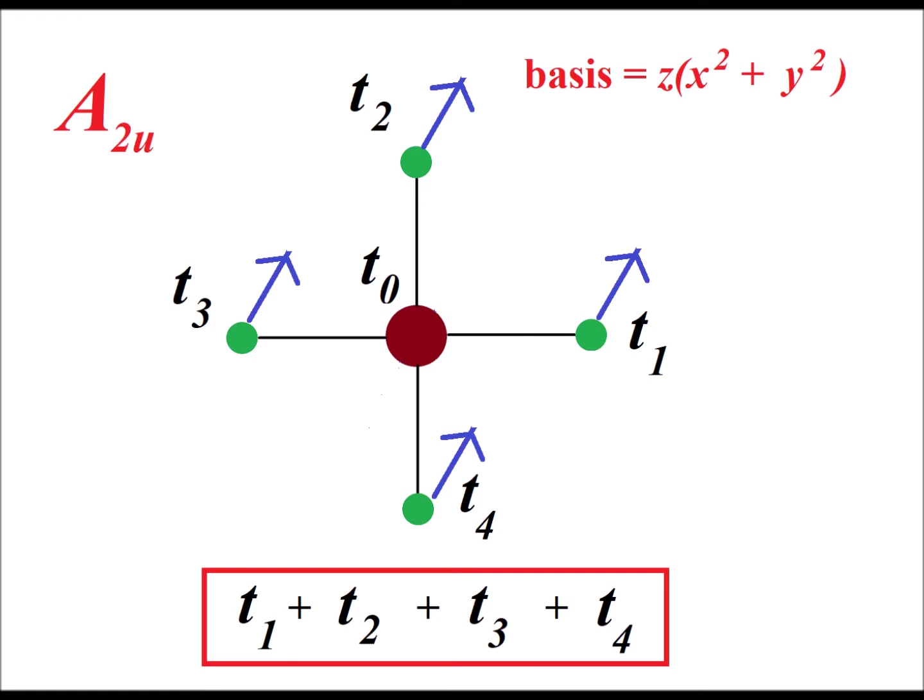The way to interpret a positive coefficient plus 1 is we have a movement in the positive z direction. So we notice that t1 through t4 are all increasing, while the central atom t0 stays in place. And this is the A2U torsion motion for this di-anion.